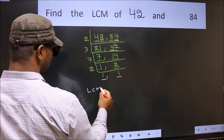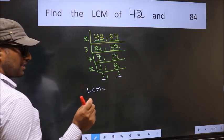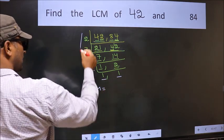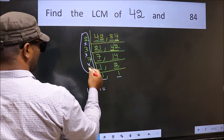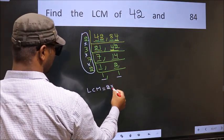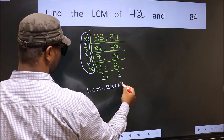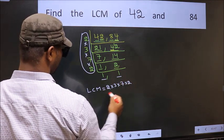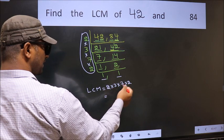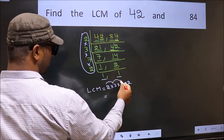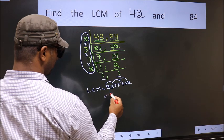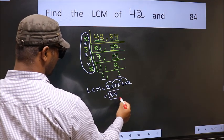So our LCM is the product of these numbers. That is 2 into 3 into 7 into 2. Let us multiply these numbers. 2 into 3, 6 into 7, 42 into 2, 84 is our LCM.